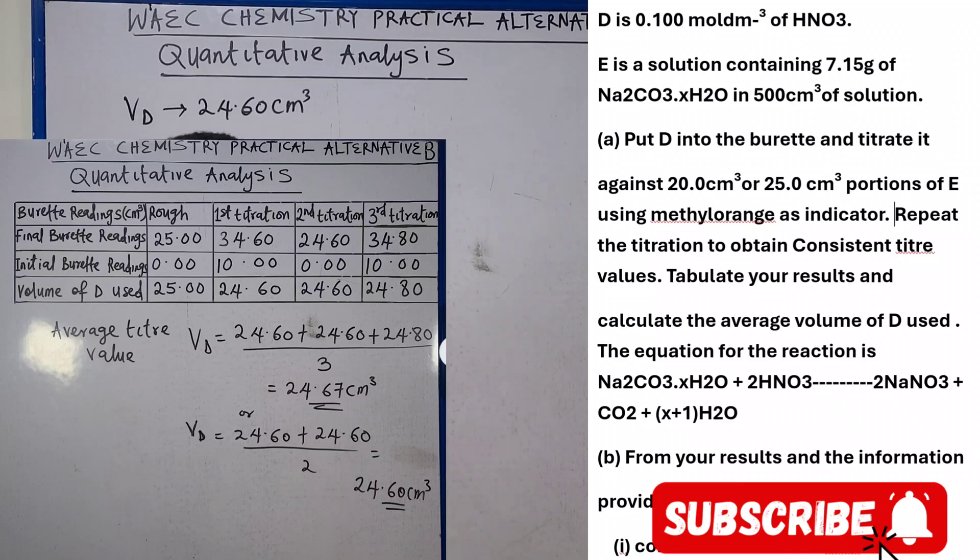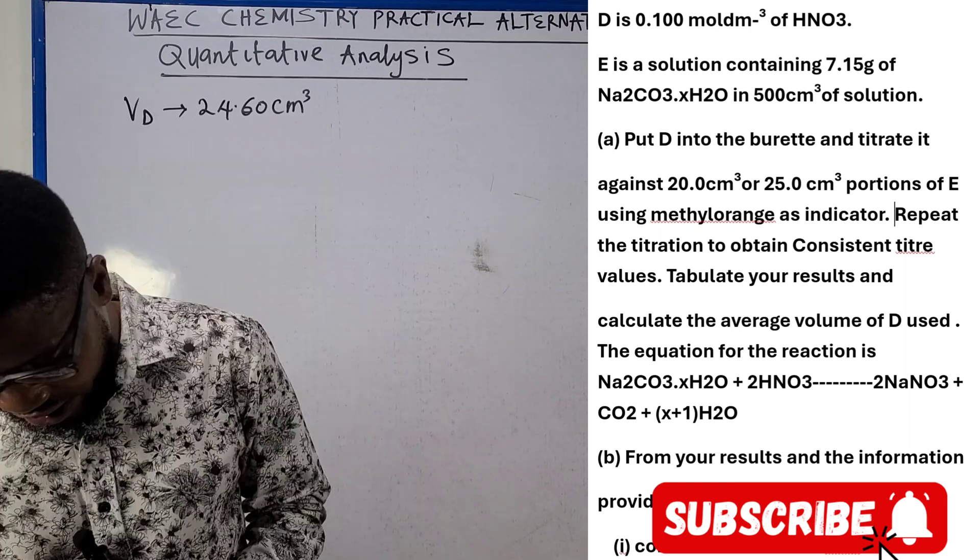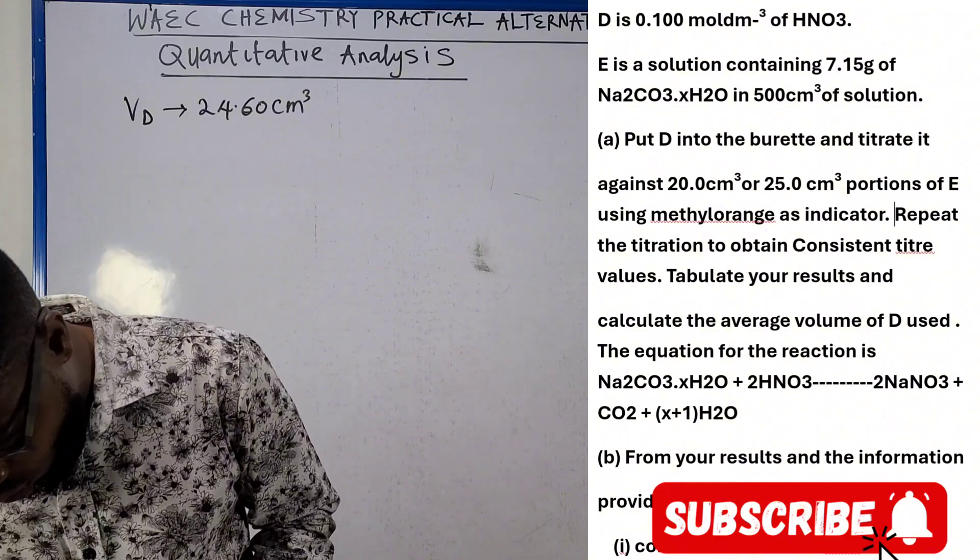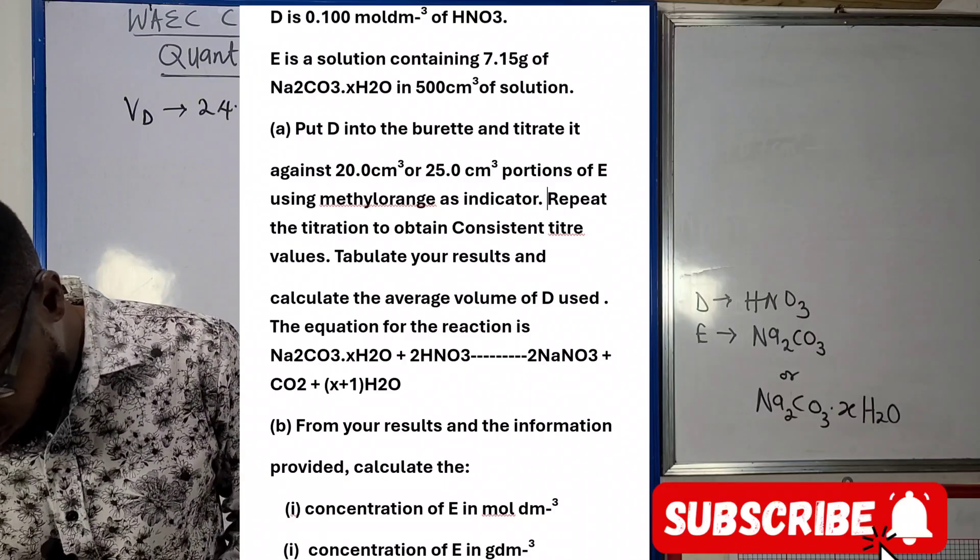We are using our VD as 24.60 cm³. When you look at the very first part of this question, as you can see on your screen, it's already answered like we have in the last lecture video, so we move straight to B.